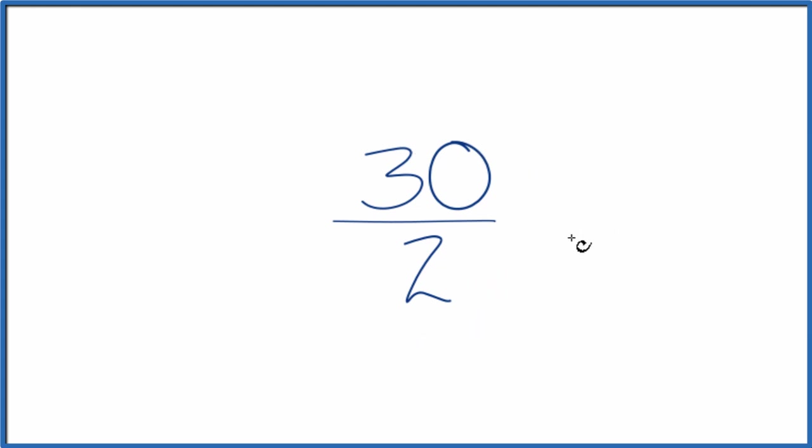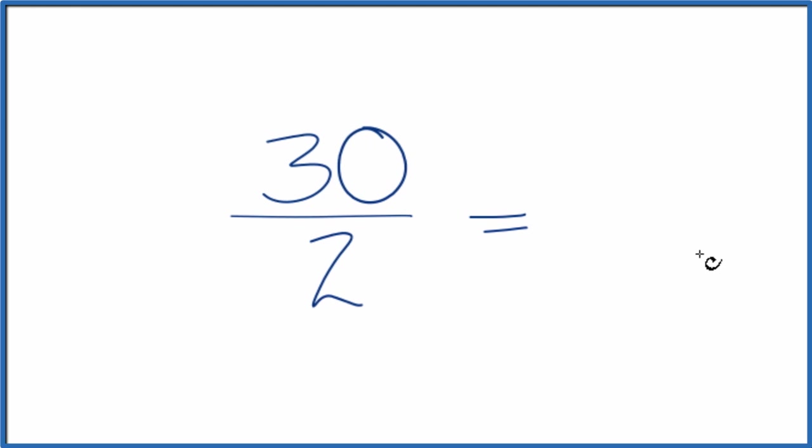What we want to do is find another number that's equivalent, that's equal to the fraction 30 over 2. It's just that we've simplified it, put it in lowest terms. Since both of these are even, let's divide them both by 2.